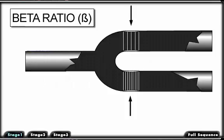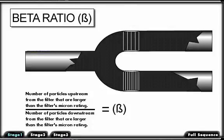Filtration devices are used to filter particles out of the system's fluid. A filter's efficiency is rated with a beta ratio. The beta ratio is the number of particles upstream from the filter that are larger than the filter's micron rating divided by the number of particles downstream larger than the filter's micron rating.